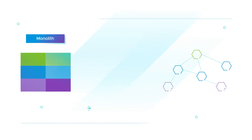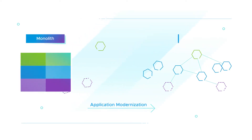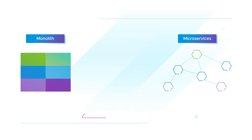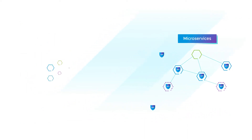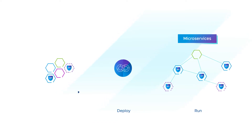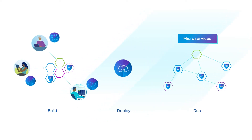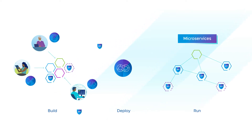Applications are being transformed from monolith architectures to microservices architectures, running in single and multiple clouds. At the same time, there's a shift-left culture happening, where security teams work closely with operations and developers to bake security controls and security testing into the build stages of the CI-CD pipeline, known as DevSecOps.